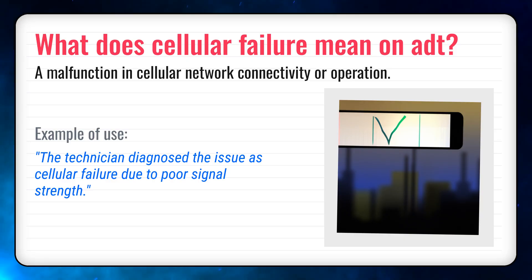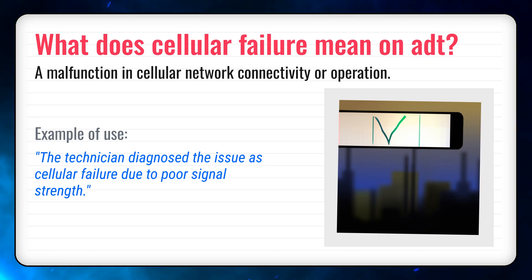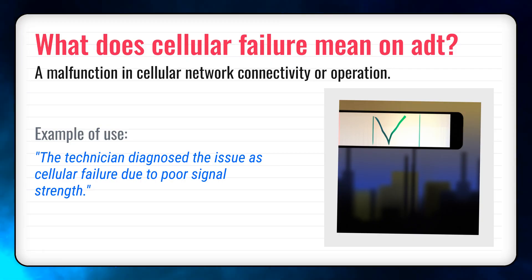First, the definition. Cellular failure means a malfunction in cellular network connectivity or operation. Think of it simply as when your phone can't connect properly to the network. Sometimes, cellular failure can also refer to the device or system inside the cell network that stops working correctly.